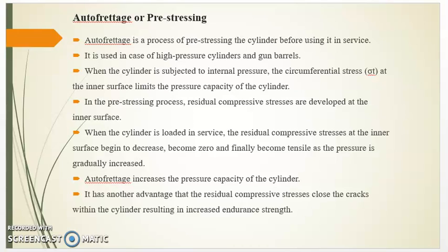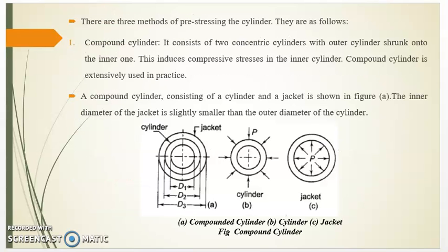Autofrettage increases the pressure capacity of the cylinder. It has another advantage in that residual compressive stresses close the cracks within the cylinder. There are three methods of pre-stressing the cylinder. First, the compound cylinder method — it consists of two concentric cylinders with the outer cylinder shrunk onto the inner cylinder.